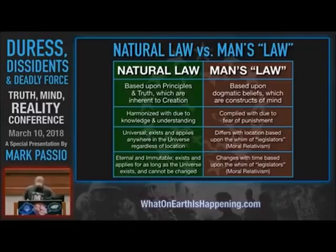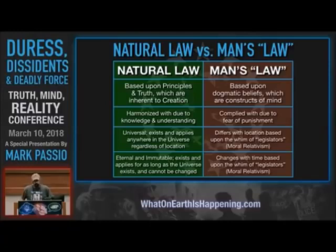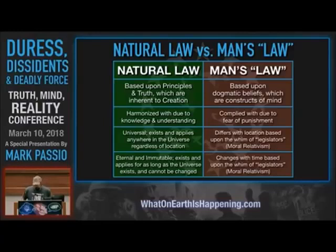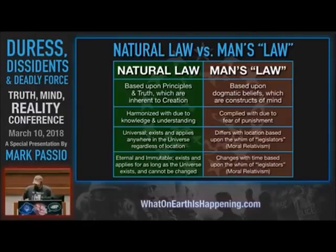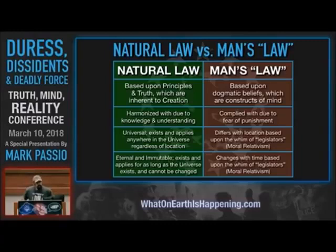Natural law versus man's law. Natural law is based upon principles and truth which are inherent to creation. Man's law is based upon dogmatic belief systems, which are the constructs of a diseased mind. Natural law is only ever harmonized with due to knowledge and understanding, or not harmonized with due to ignorance. Man's law, on the other hand, is only complied with due to fear of punishment. Natural law is universal — it exists and applies anywhere in the universe regardless of location. Man's law differs with location based upon the whim of legislators, and that is a form of moral relativism — the idea that we can decide what right and wrong are, as though they are not objective and inherent to creation.